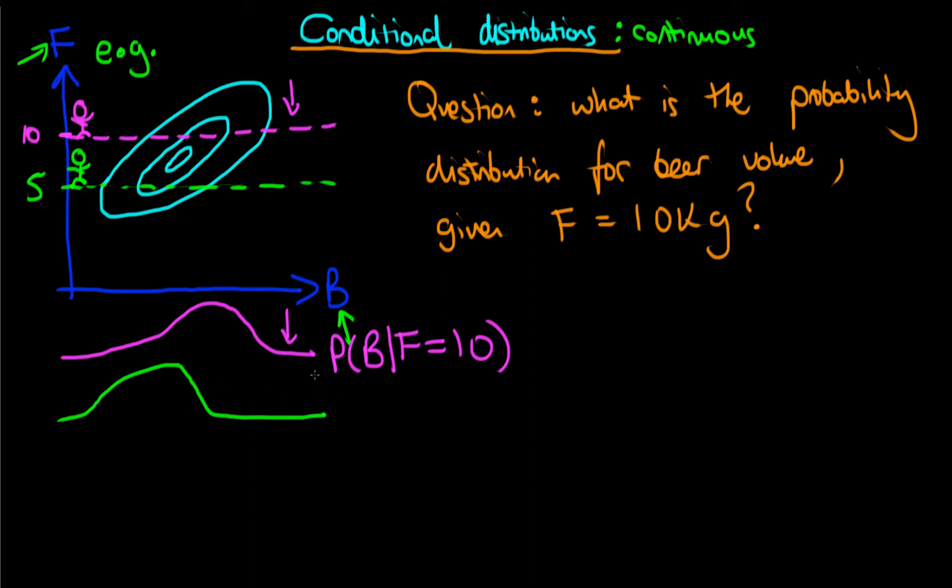And that sort of happens more quickly than it did for the previous case. And so our distribution is sort of shifted to the left, our conditional distribution corresponding to beer volume, given that an individual has a level of body fat which is five kilograms. So we've sort of intuitively reasoned how to derive the conditional distribution in this case.